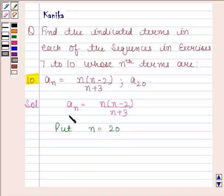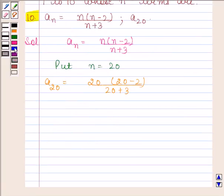By substituting n as 20 in the nth term we get a_20 is equal to 20 into 20 minus 2 upon 20 plus 3. Now this is equal to 20 into 18 upon 23 and this is equal to 360 upon 23.